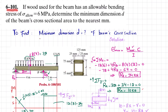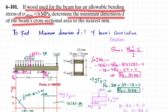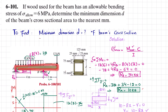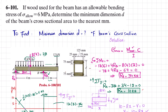Welcome back. Problem 6-101: the statement is, if wood used for the beam has an allowable bending stress of 6 megapascals, determine the minimum dimension d of the cross-section area to the nearest millimeter. This is an overhanging beam with a uniformly distributed load of 8 kilonewtons per meter over a length of 4 meters at the free end, and a 12 kilonewton load. This is the second part of problem 6-100, which I have already solved — the link is below. You have to find the minimum dimension d of the cross-section.